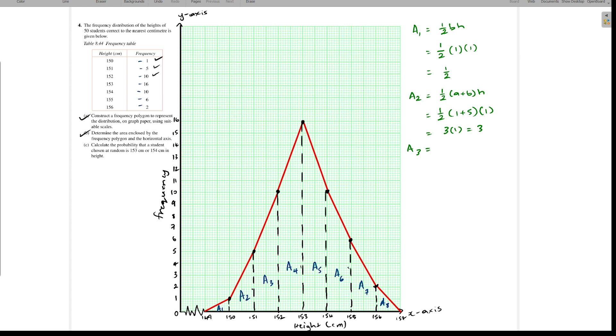So area 3 now, the same concept applies - half the sum of parallel sides times height. Area 3 would be 5 plus 10, that's 15. So half of 15 is 7.5 times 1, so 7.5.